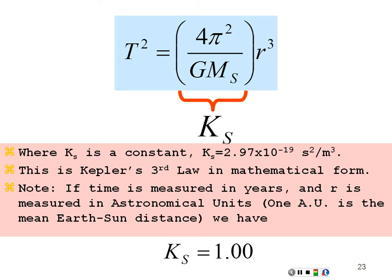If you knew how many Earth years other planets take to go around the Sun, you can calculate their distance in astronomical units using T² = R³. For instance, Mars takes approximately two Earth years to go around the Sun: two squared is four, and the cube root of four is about 1.52 — so Mars is 1.52 astronomical units from the Sun. That's how we can calculate how far planets are from the Sun using Kepler's third law.